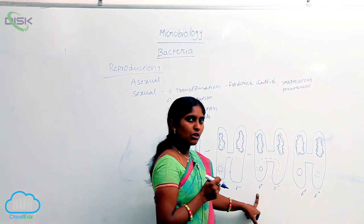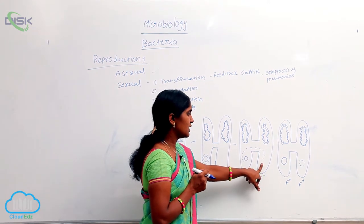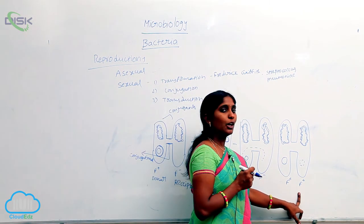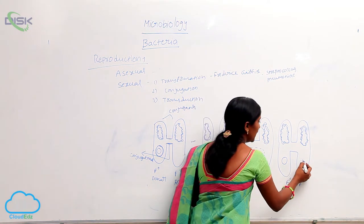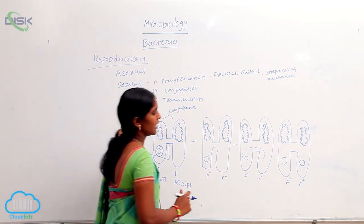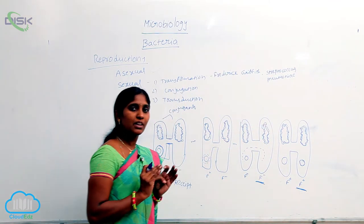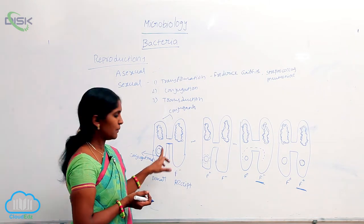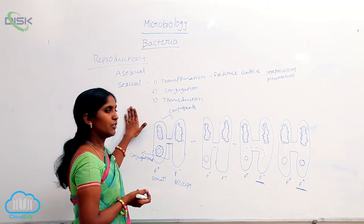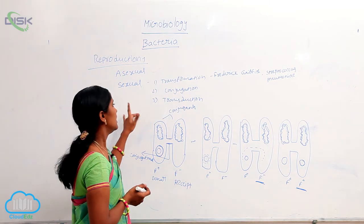The transfer of the replicated plasmid is taking place. So the F factor enters the F-minus cell, and then the F-minus cell is turned into an F-plus cell with a full plasmid. At the end of conjugation, the recipient cell becomes a donor cell — that is the variation. The genetic material is transferred from the F-plus cell to the F-minus cell. That is conjugation, found in E. coli by Lederberg and Tatum in 1946.